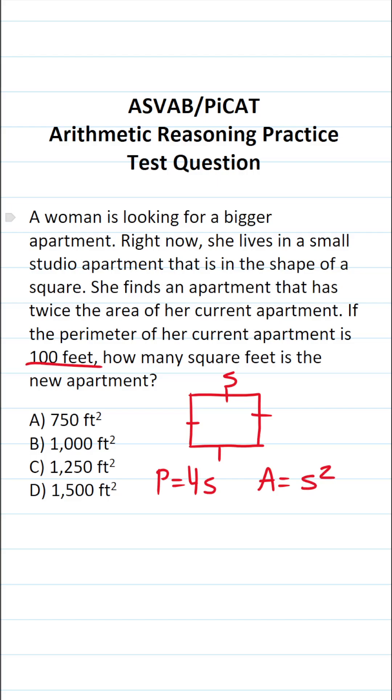That said, we also know that the perimeter of her current apartment is 100 feet. So I can go ahead and plug in 100 for P over here. This becomes 100 equals 4S. If I divide both sides by 4 now, this crosses out, leaving me with S over here. 100 divided by 4 is 25. So I know this side length is 25.